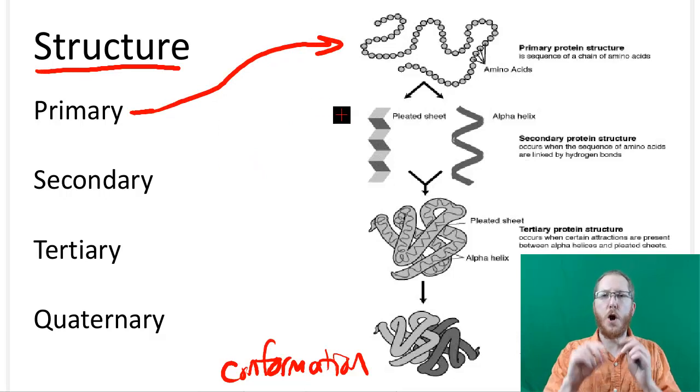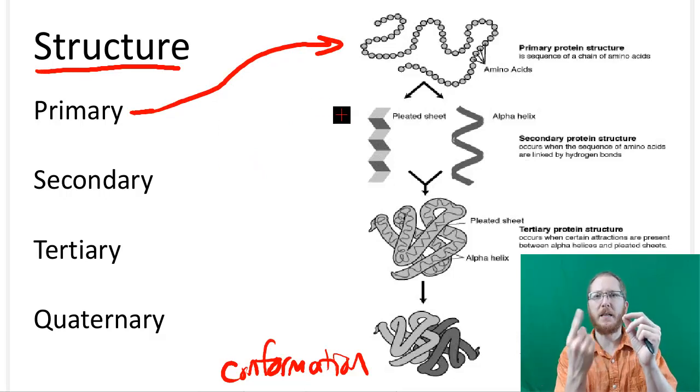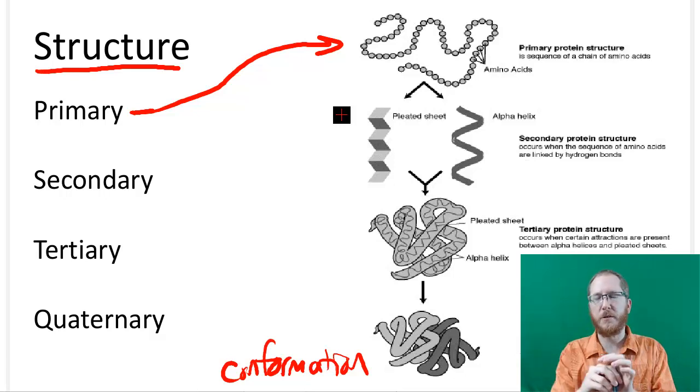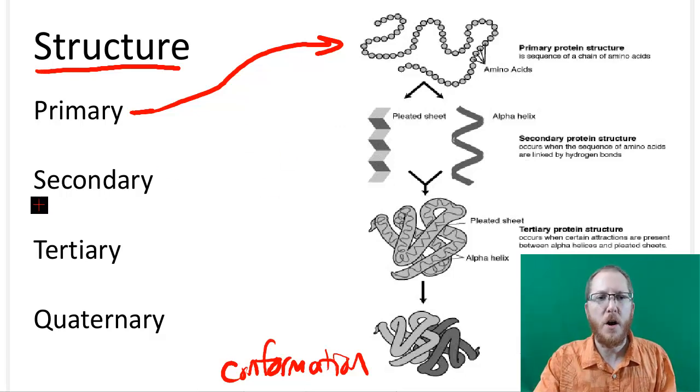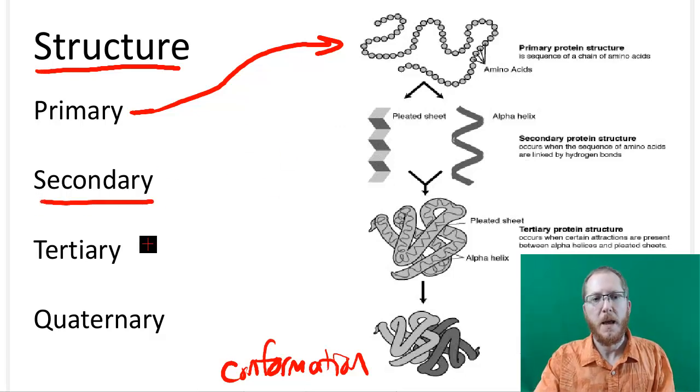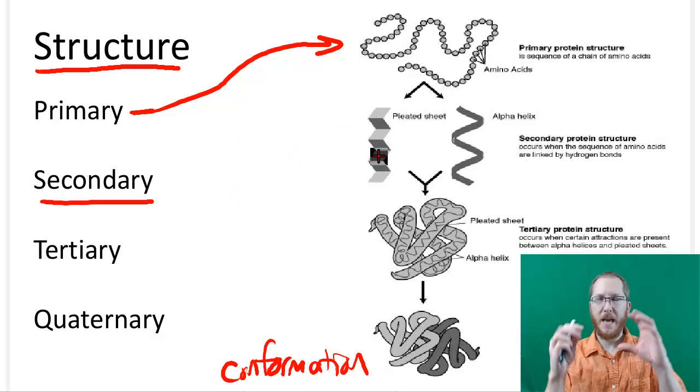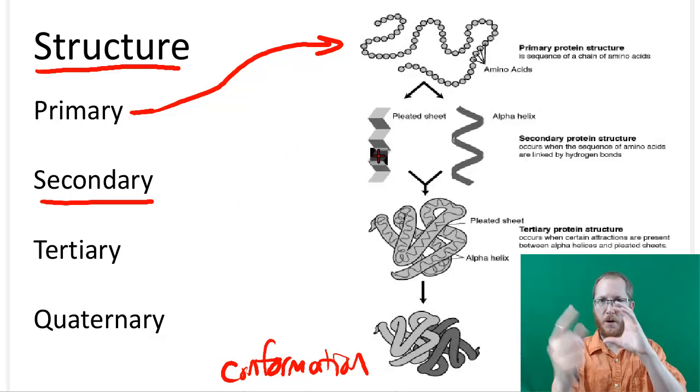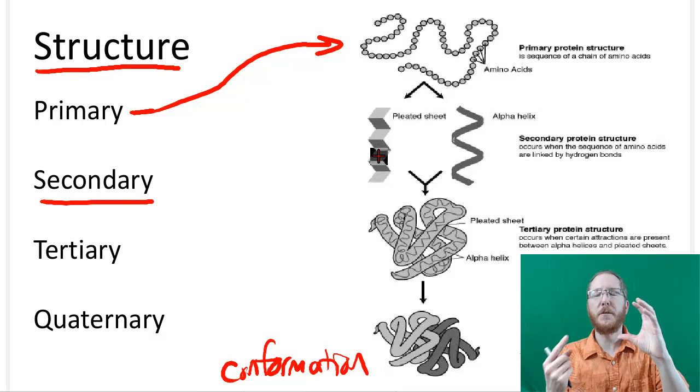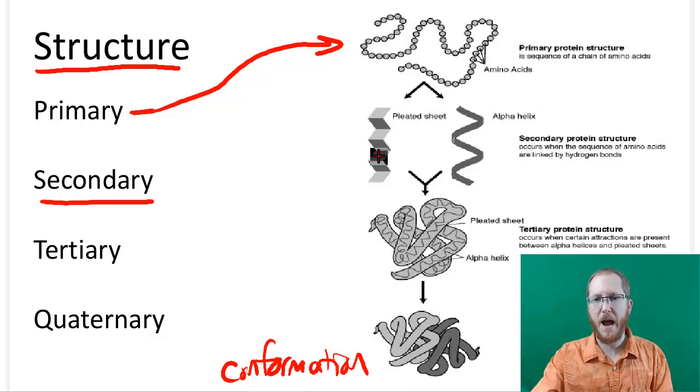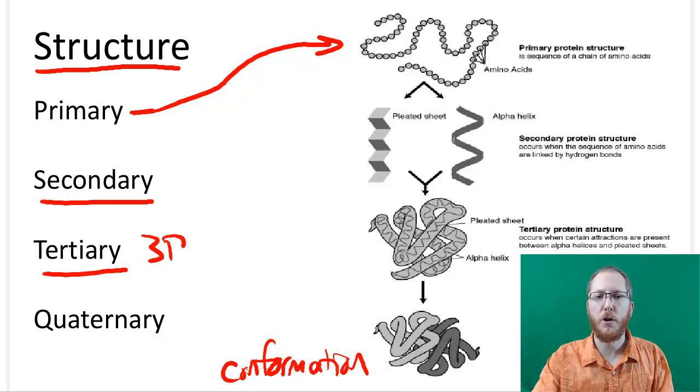When those long strings start to interact with each other, and they form like helixes or those pleated sheets, they start to kind of form these shapes, we call that the secondary structure. And then when these shapes, when these kind of organized strings, if you will, that have configured themselves into basic shapes start to interact, we get this complex 3D structure called tertiary. And this should make sense. Primary basically means one, secondary two, tertiary means three, and quaternary will mean four.